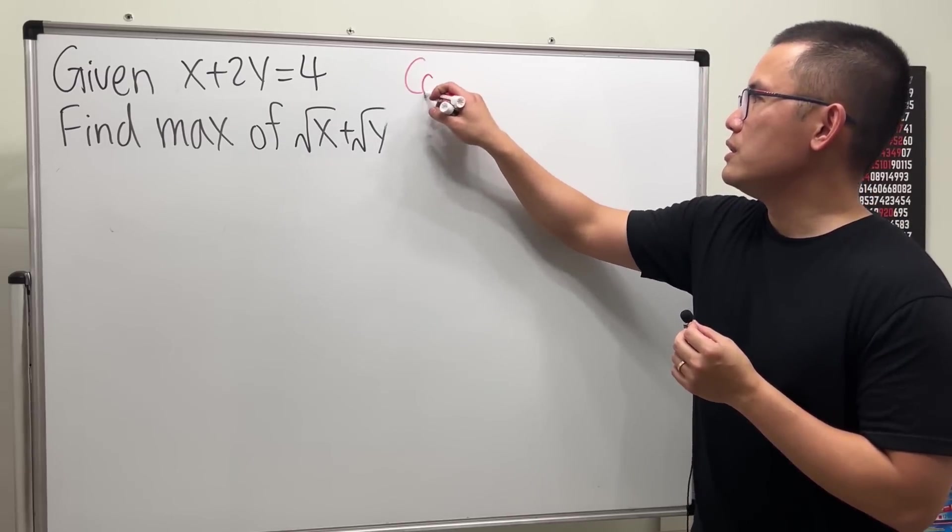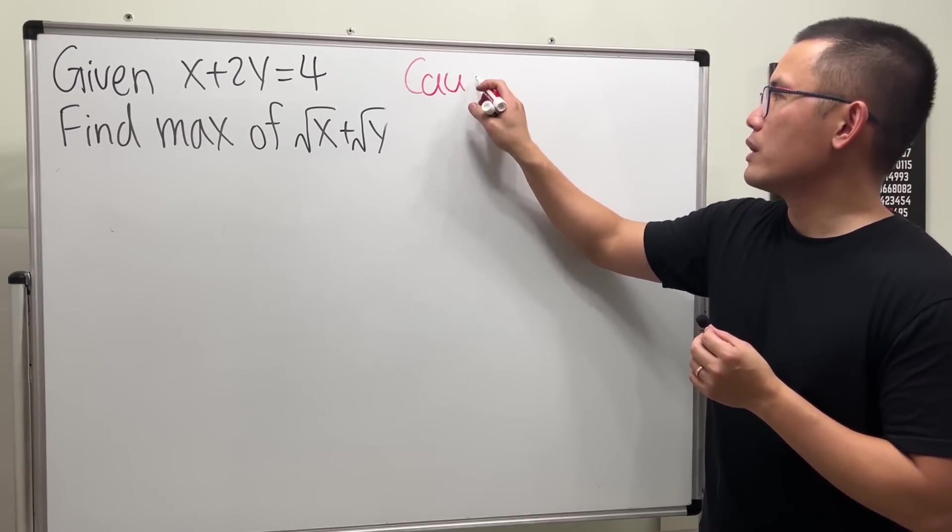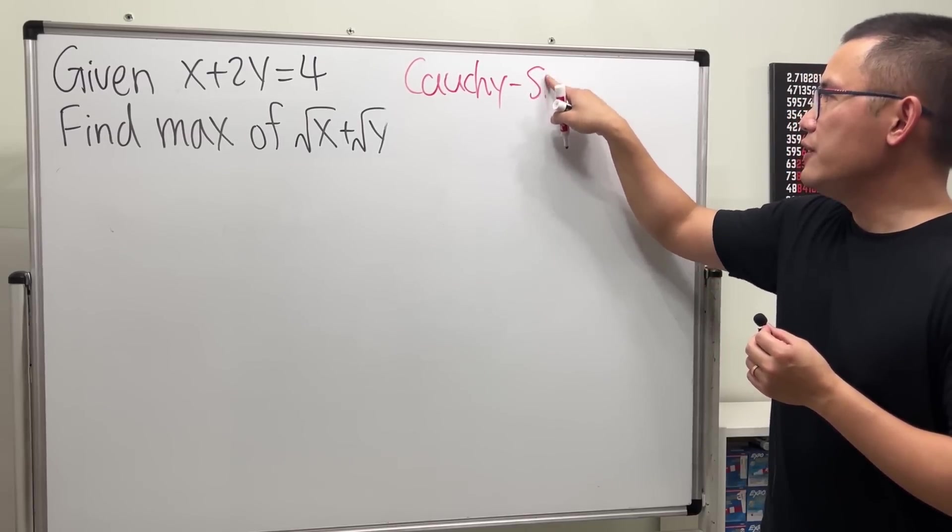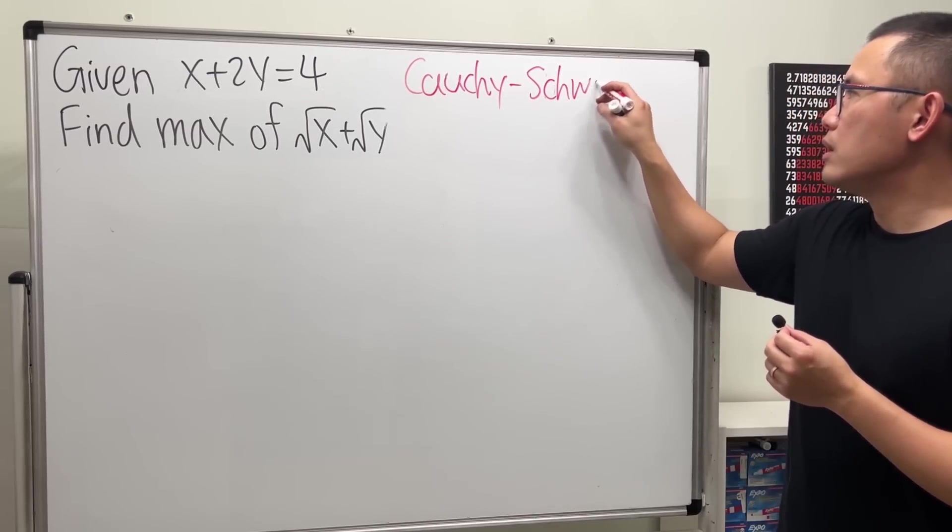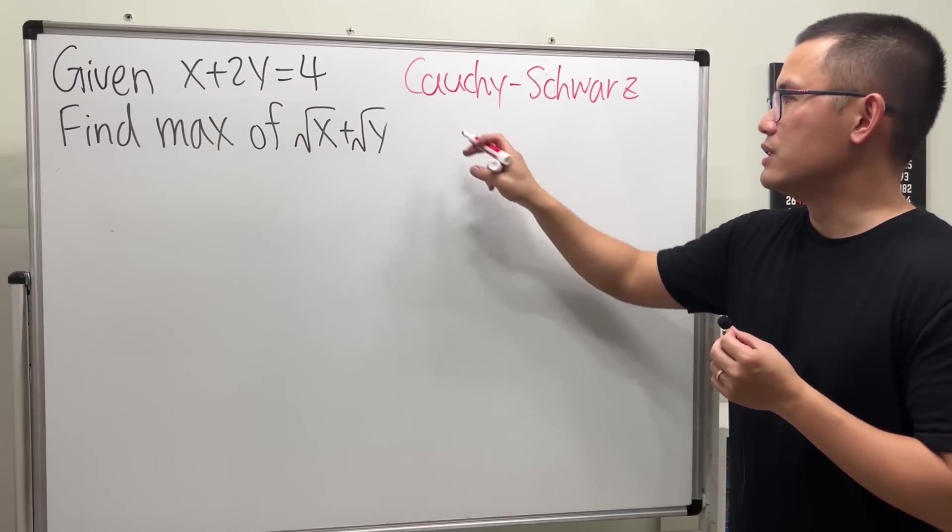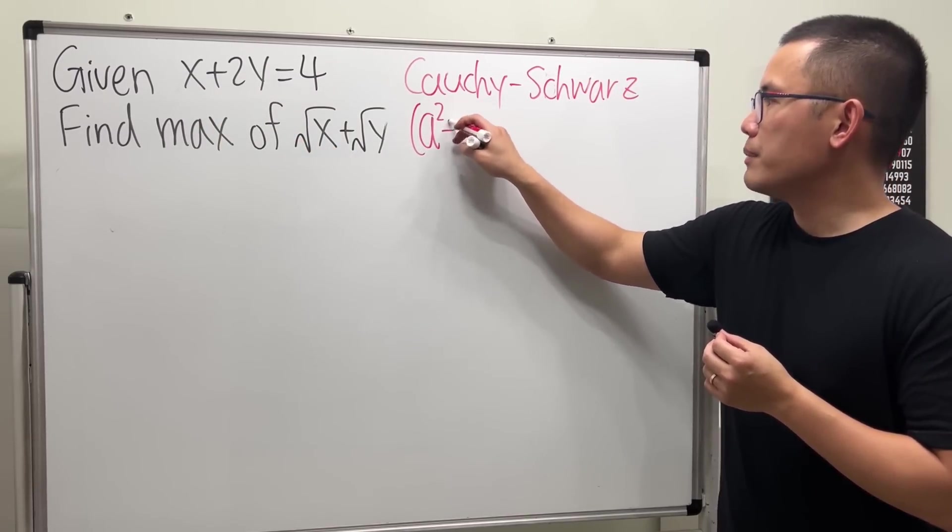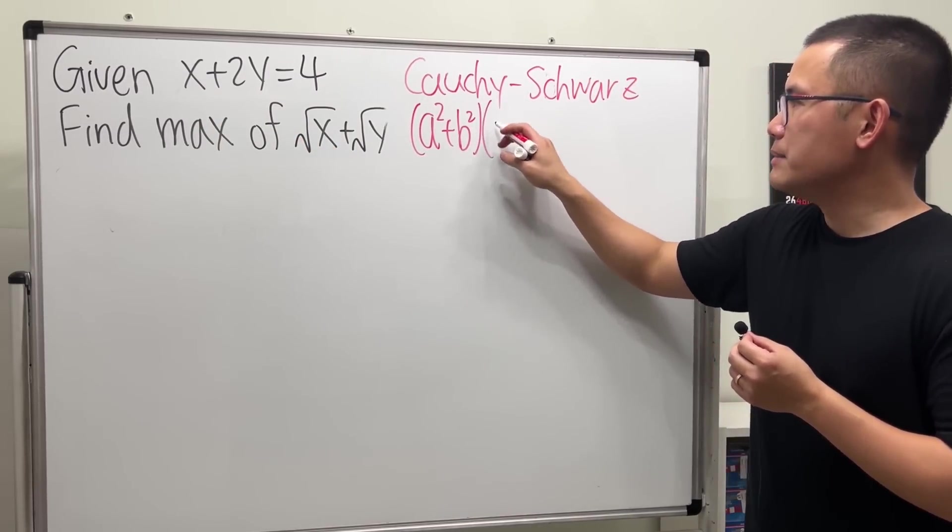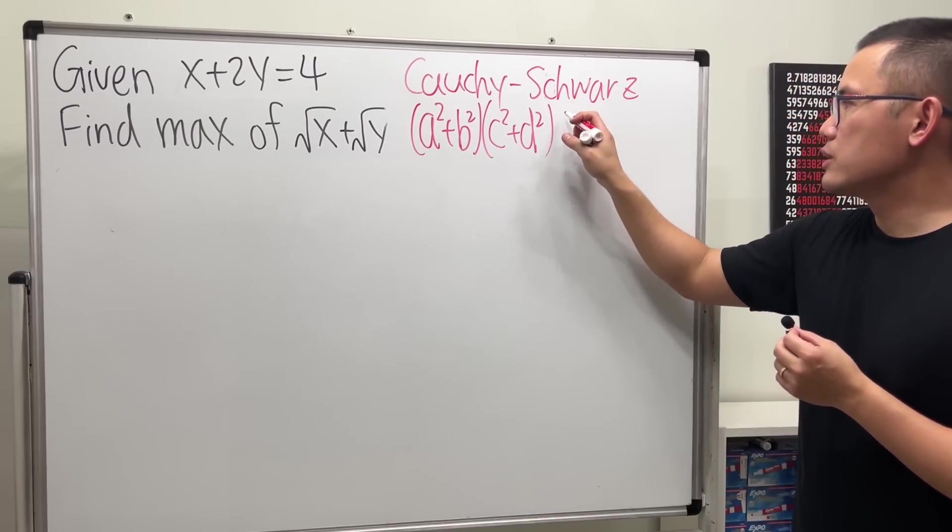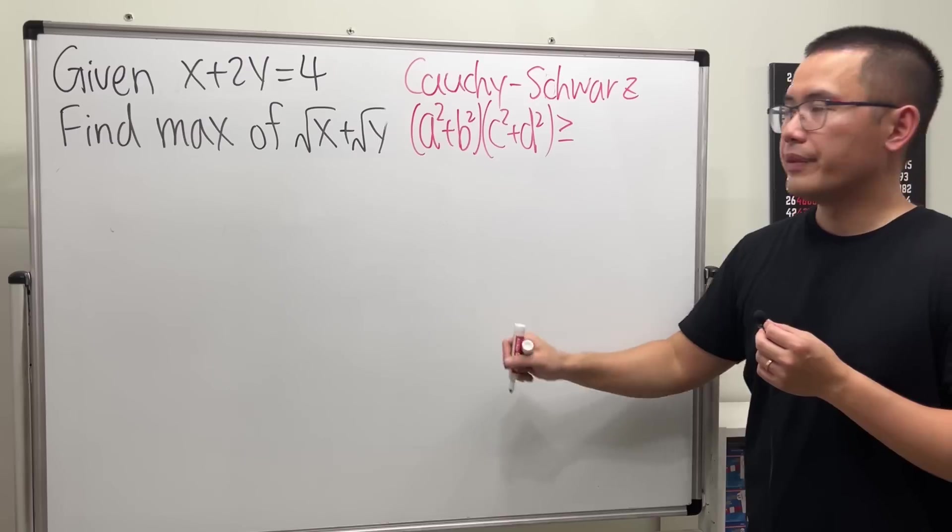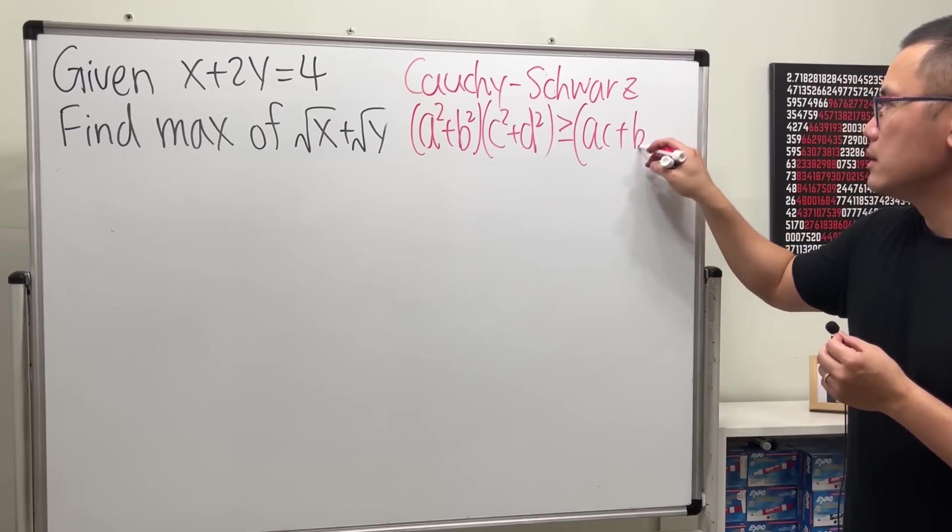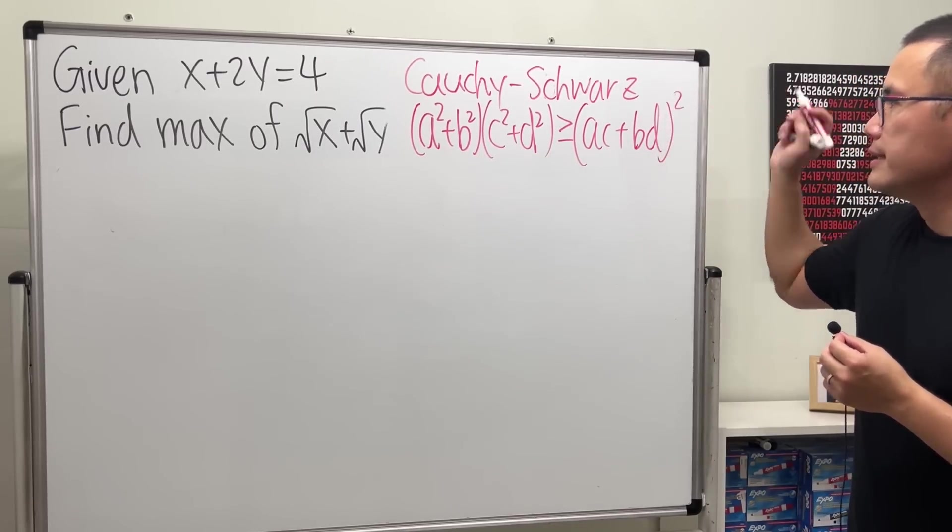But here is the Cauchy-Schwarz inequality that we can use. There are different versions of this, though. But notice that here we have two terms, so we will use this version. a squared plus b squared times c squared plus d squared. This is going to be greater than or equal to a times c plus b times d, the whole thing squared.